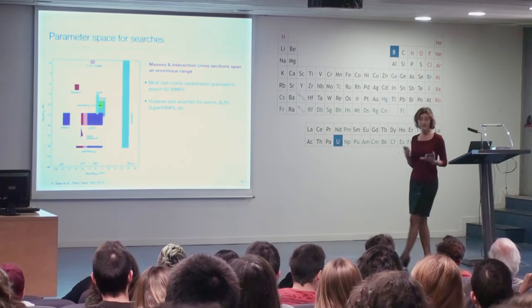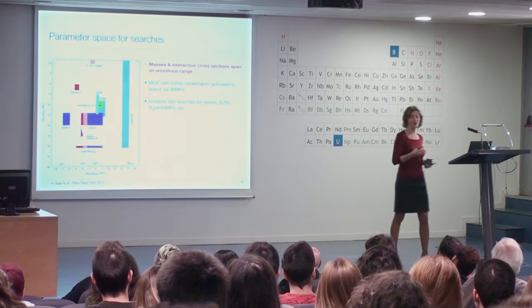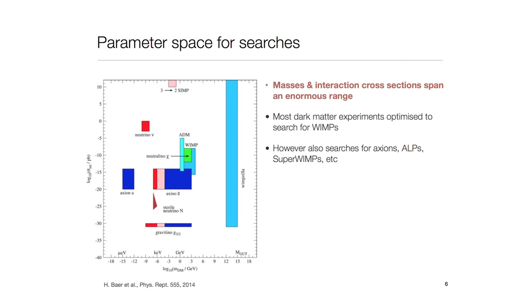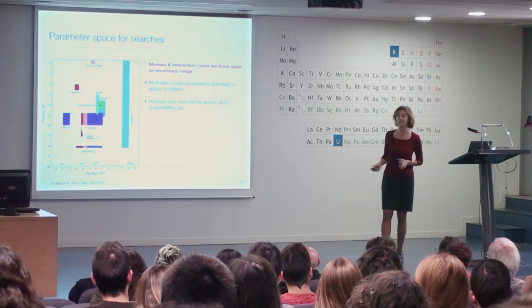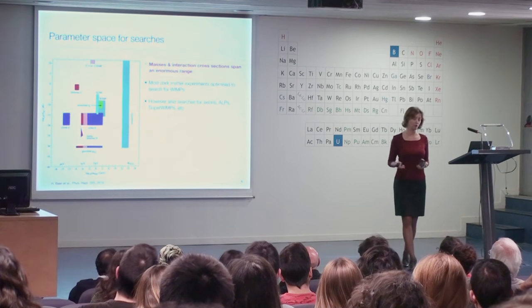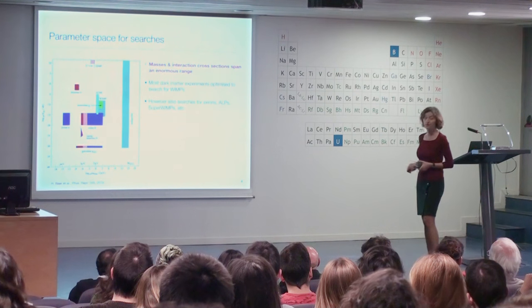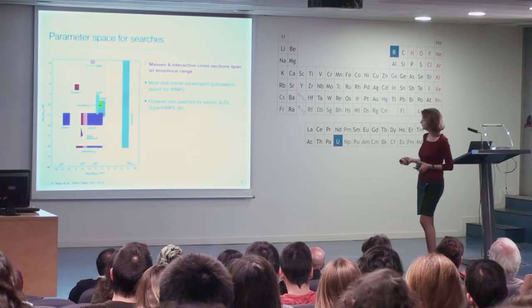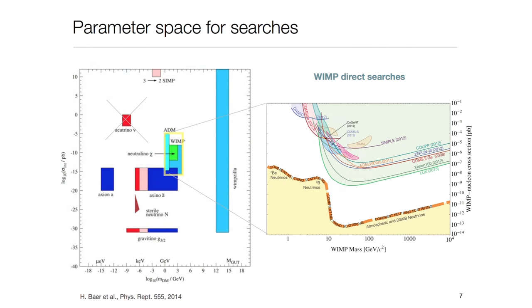We don't know what dark matter is made of, but theorists have a lot of ideas. The parameter space here — just the cross-section of the dark matter particle with normal matter, normalized to low-energy neutrino cross-sections, as a function of mass — spans about 80 orders of magnitude. Most searches are optimized to look in the WIMP region — weakly interacting massive particles. It looks like a small region in this immense parameter space, but it is actually not so small.